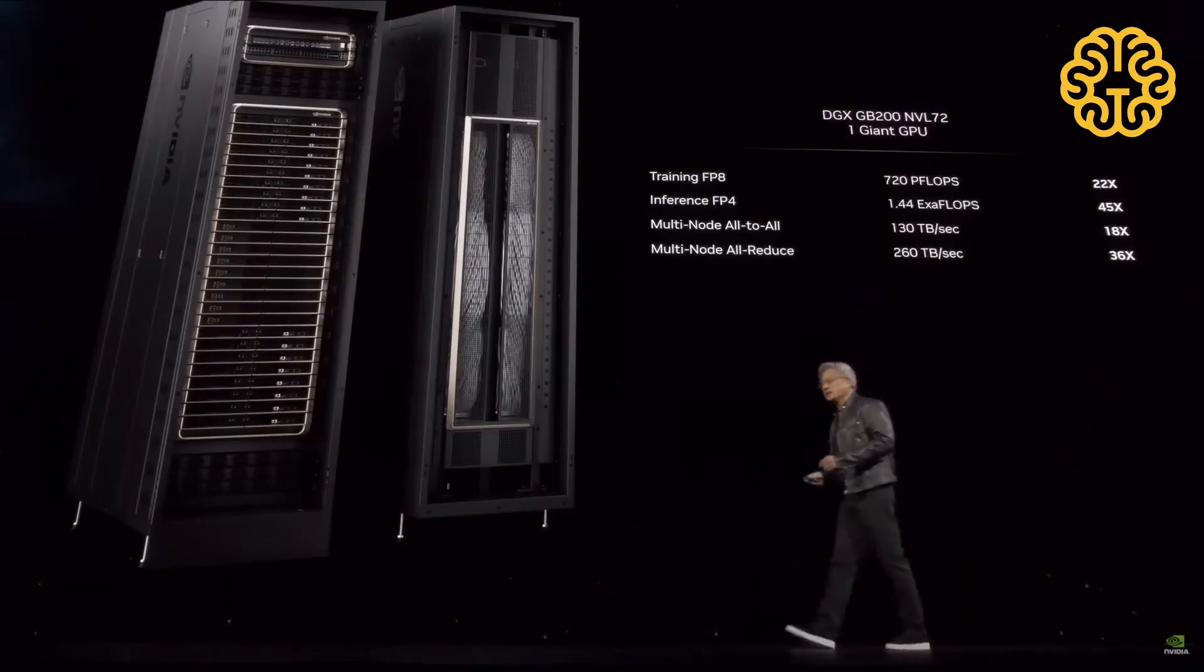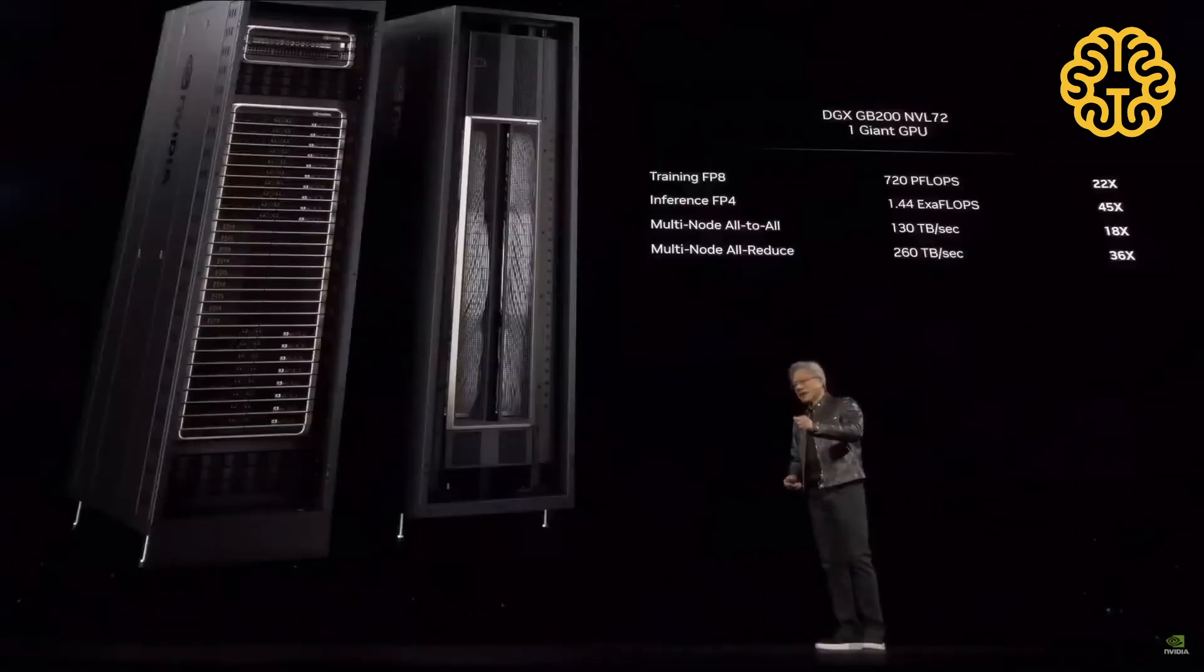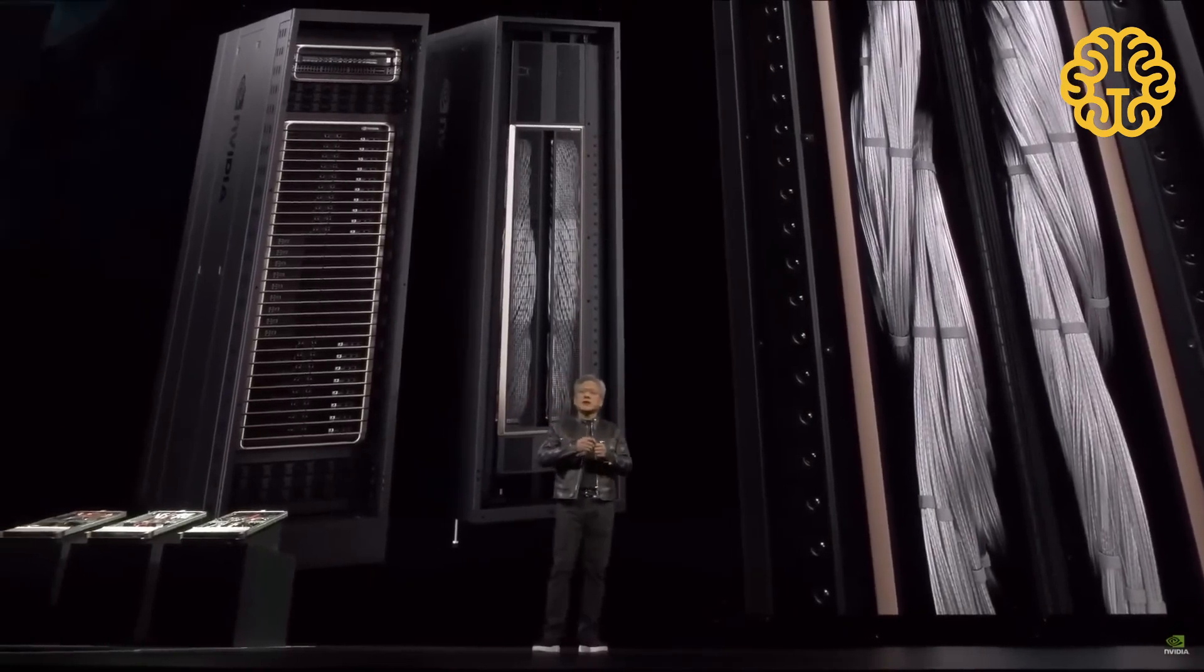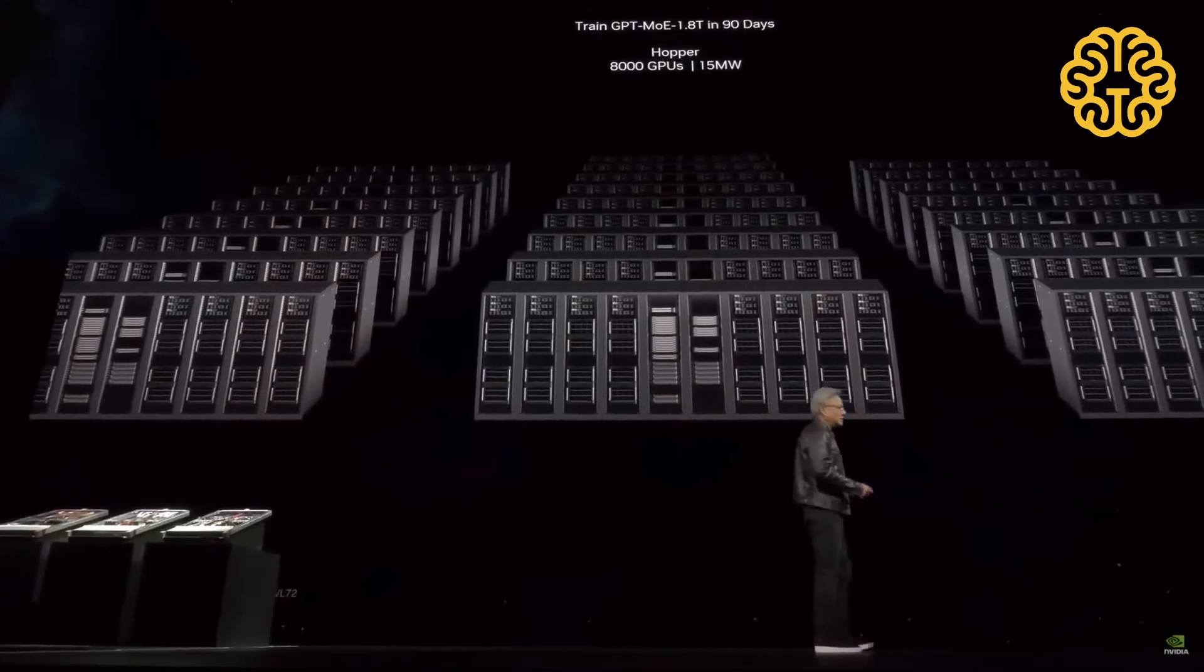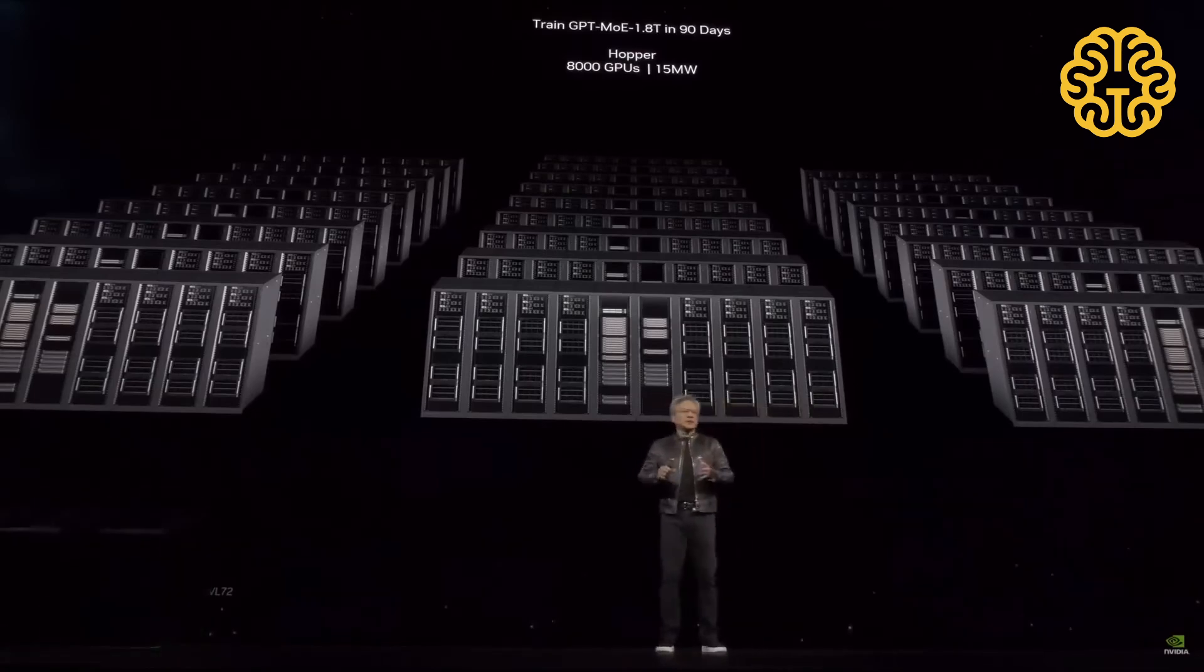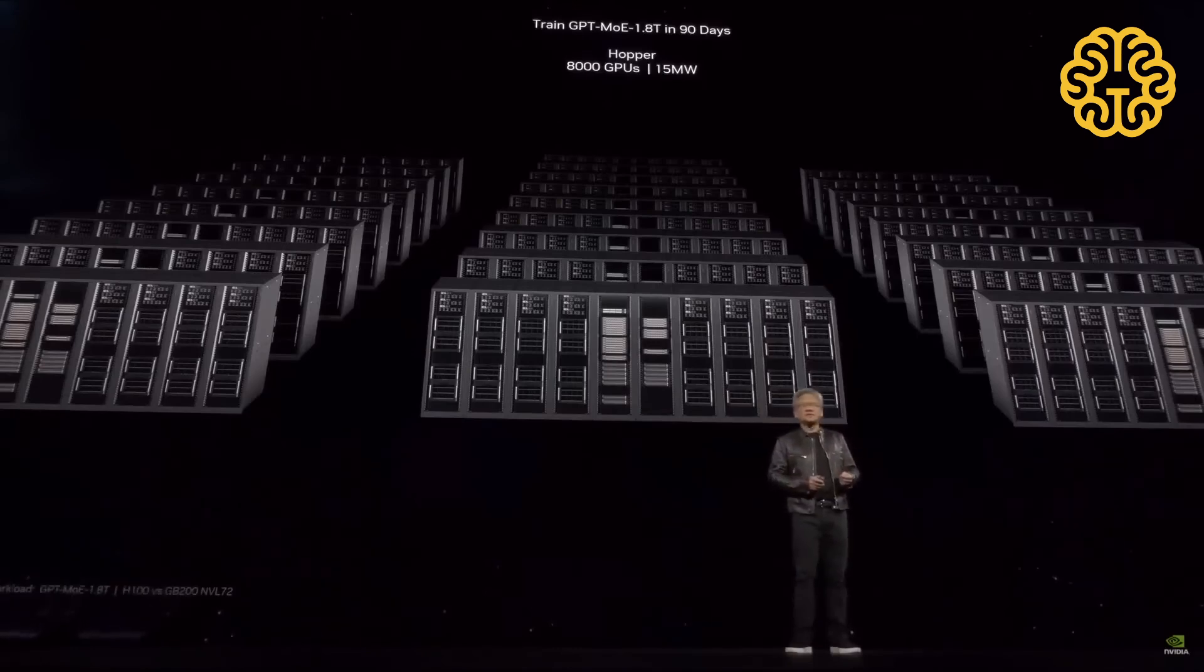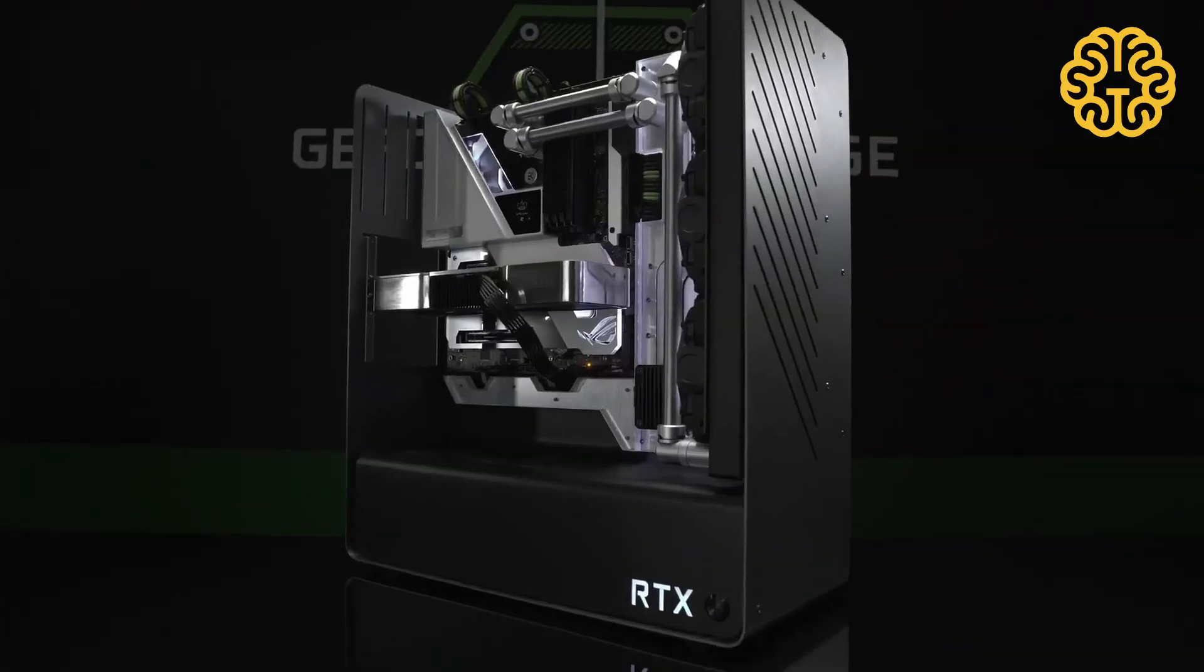NVIDIA also told journalists one of the key improvements is a second-generation transformer engine that doubles the computing, bandwidth, and model size by using 4 bits for each neuron instead of 8. Hence the 20 petaflops of FP4 mentioned earlier. A second key difference only comes when you link up huge numbers of these new GPUs. A next-generation NVLink switch is established. This lets 576 GPUs talk to each other with 1.8 terabytes per second of bidirectional bandwidth. That required NVIDIA to build an entirely new kind of network switch chip, one with 50 billion transistors and some of its own onboard compute. All this indicates that we're slowly being ushered into the age of quantum computing.